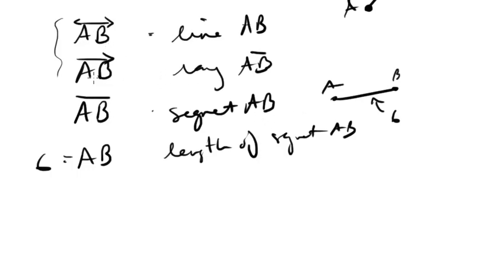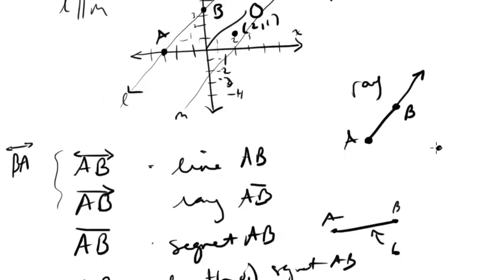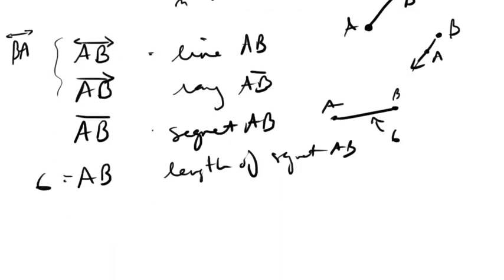We can flip segment notation — this can be line BA with no issue. However, we can't really flip a ray the same way, because ray BA would mean the terminating point is at B going through A, which is a different ray. You don't need to worry about rays too much — they don't come up often on the SAT.